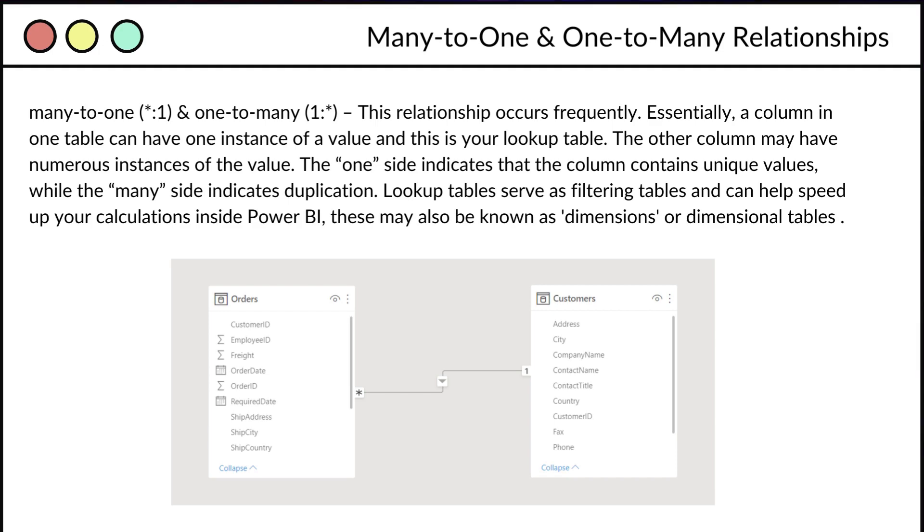Now, in the orders, we see the many symbol, the asterisk. That's because we are connecting orders and customers by the customer ID. That works conceptually. Now in the orders, we could have many customer IDs over the span of one or many orders. However, the customers is a dimensional view of customers, and we would just have one customer ID per customer.